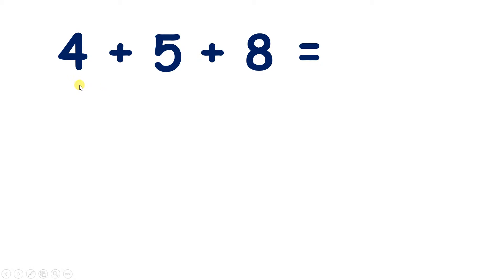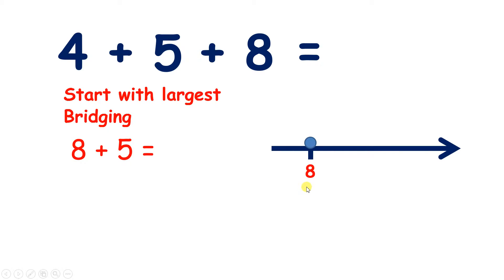Now we have 4 plus 5 plus 8. Again we can start with the largest, so let's add 8 and 5. Now to do this we can use bridging. So we start on 8. How many more do we need to get to 10? 2 more gets us to 10, but we want to add 5. So how many more do we need to add? We need 3 more, so that makes 13.